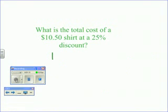First, you multiply $10.50, the original price, by the discount, 25%. That equals $2.63.